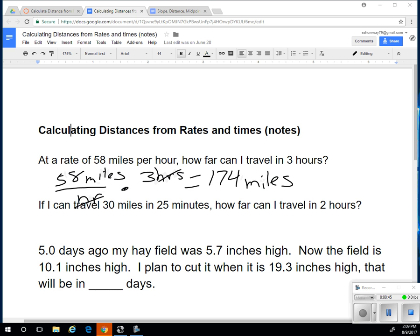If I can travel 30 miles in 25 minutes, how far can I travel in 2 hours? So 30 miles in 25 minutes. There are 60 minutes in an hour, so the minutes will cancel, I'll just have miles per hour, and then I'll multiply by 2 hours. Hours will cancel, and it will just be a distance.